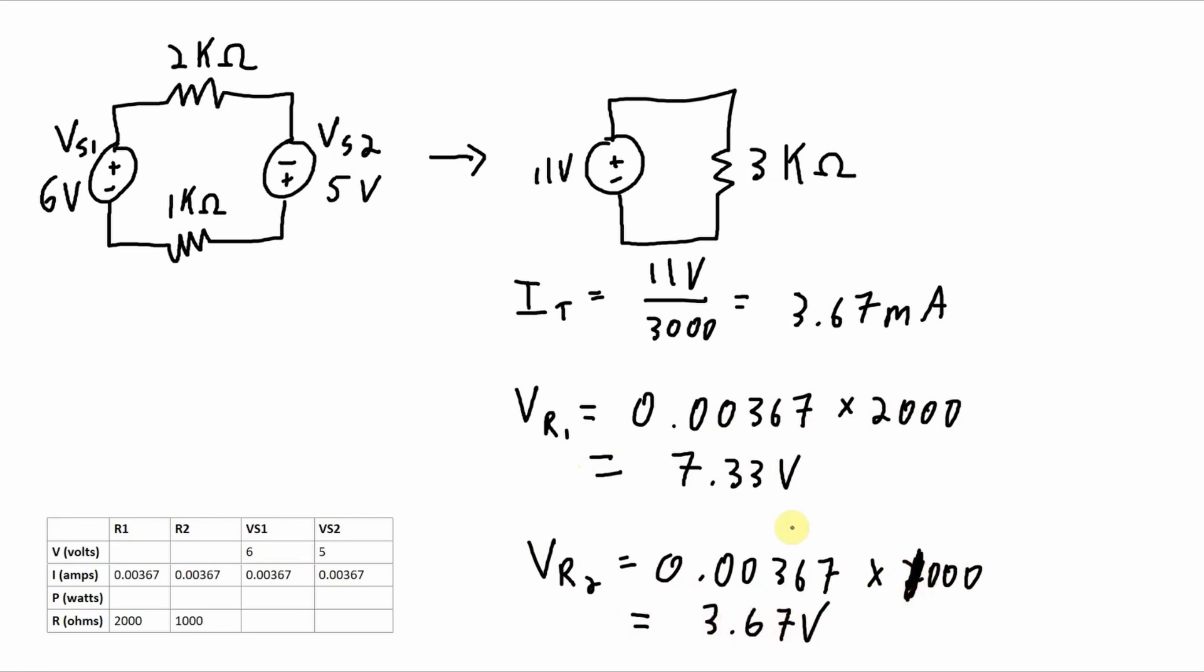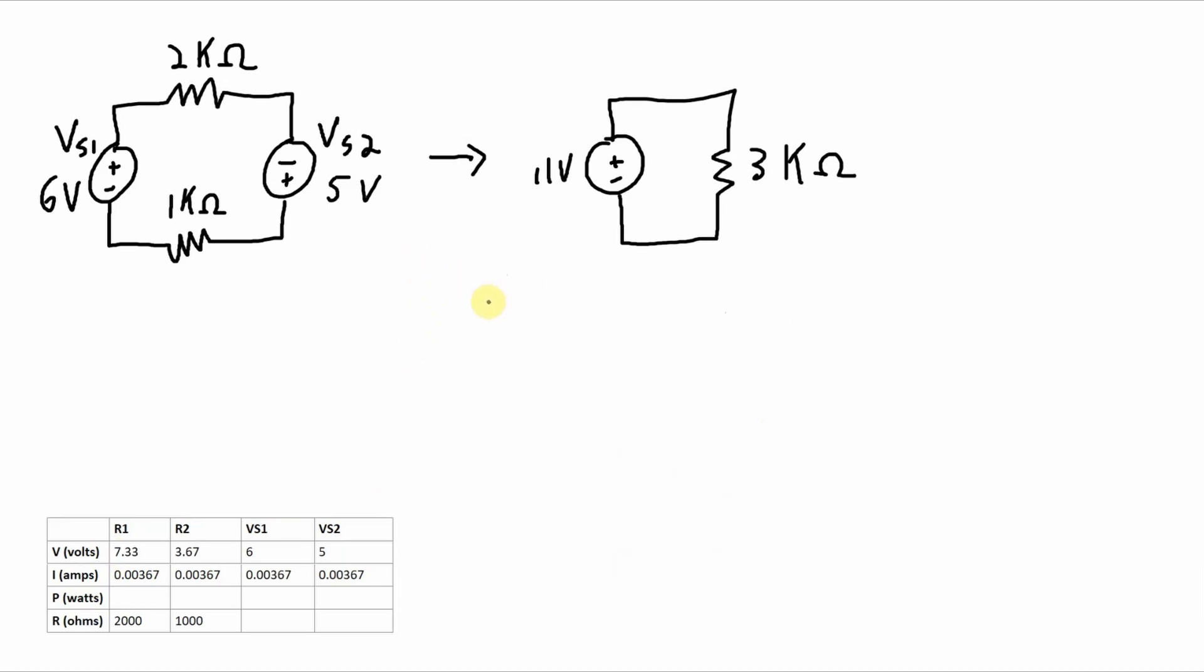Sorry, that should have been a 1 there. And the final thing to calculate is the power for all of these components. Let's just use the V times I equation for all of these because we know the voltages and currents through them all. That's the simplest one to go with. The two sources are different. We have two of them. So we need to calculate the individual power contributed by each one of the sources.